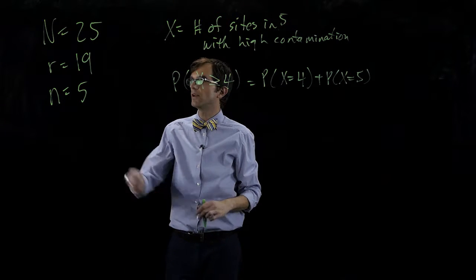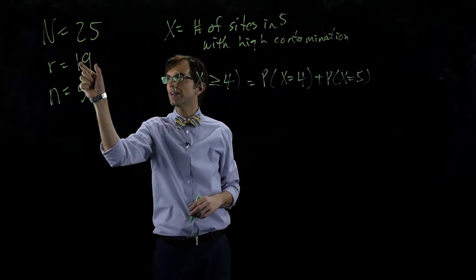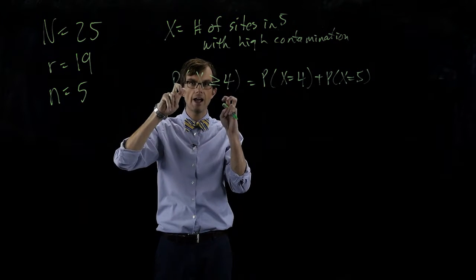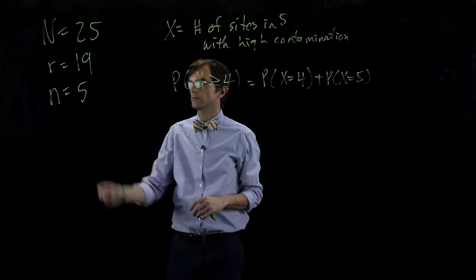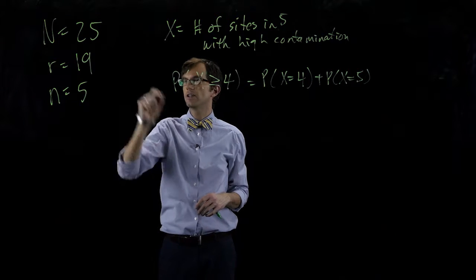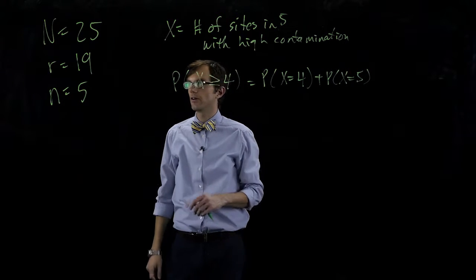This is a hypergeometric problem. We know exactly what this population looks like. We know exactly how many successes. We're calling a high contamination site a success here, that's just the notation. We have a number of successes and a number of failures, and we know exactly how many successes and how many failures there are in the population.